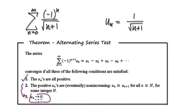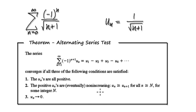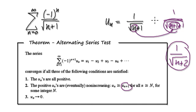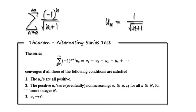Check condition three: make sure the limit as n tends to infinity heads towards zero. As n gets bigger and bigger, one over the square root of n+1 heads towards zero, so condition three is met. Now check condition two: make sure the series is non-increasing. Looking at the next term, with n replaced by n+1, the denominator becomes the square root of n+2. The next term will always be less than the current term, so condition two is met. All three conditions have been satisfied.